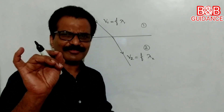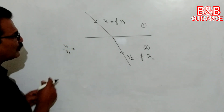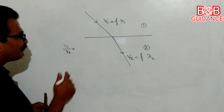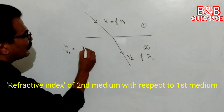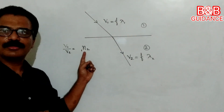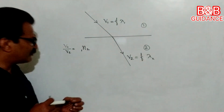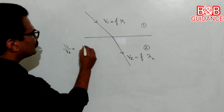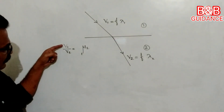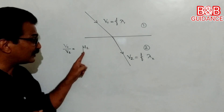Now, there is one very important ratio: V1 by V2 — the velocity of light in the first medium divided by the velocity of light in the second medium. This has a special name: refractive index. We call it the refractive index of the second medium with respect to the first medium. The symbol we use is N, though in many books you will also find the symbol mu (μ).